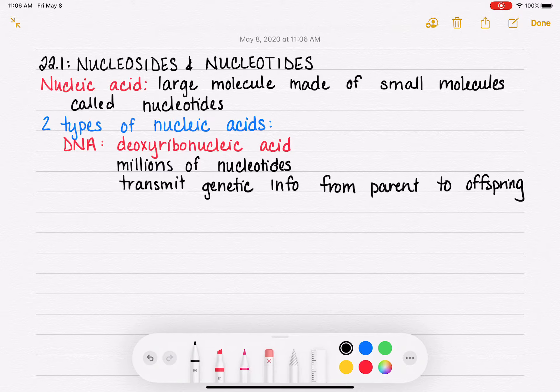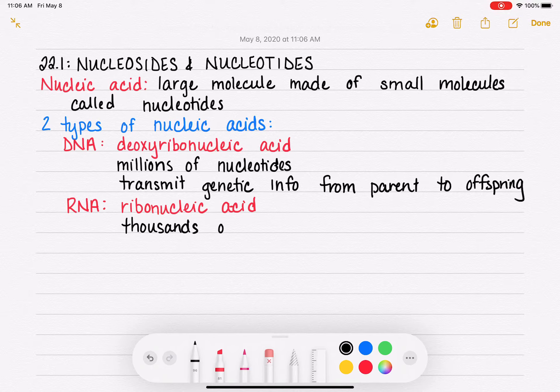The other type of nucleic acid, as you know, is RNA, which stands for ribonucleic acid. And brief definition of RNA, it's much smaller than DNA. It contains only thousands of nucleotides.